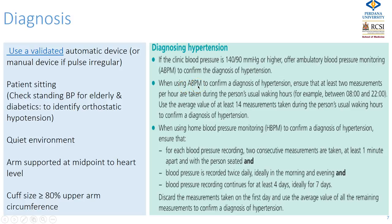When using ambulatory monitoring, make sure that at least two measurements are taken per hour during waking hours and there should be at least 14 measurements taken during this time. For home blood pressure monitoring, two consecutive measurements should be taken at least one minute apart with the person seated, recorded twice daily ideally in morning and evening, continuing for at least four days and ideally seven days. Discard the first day's measurements as they may show a white coat effect, and use the average value of all remaining measurements to confirm a diagnosis.